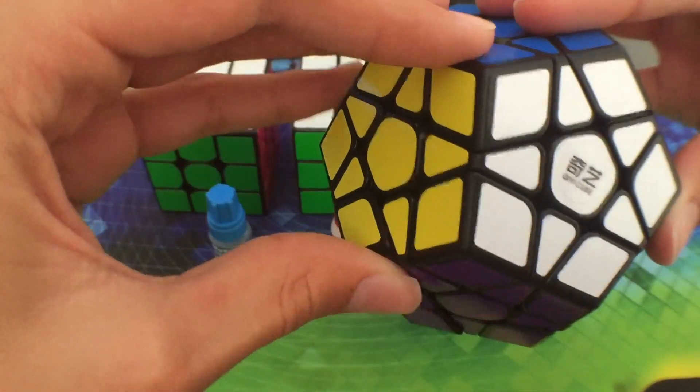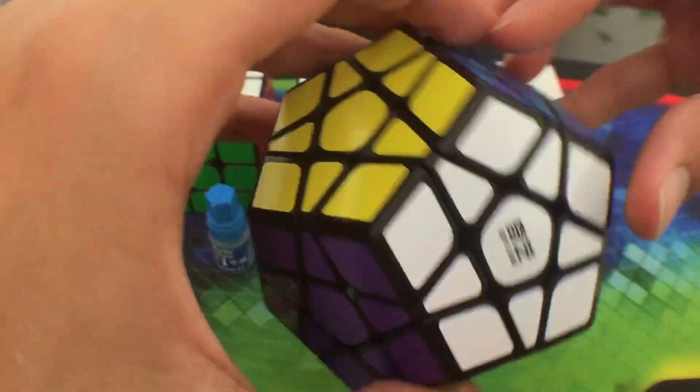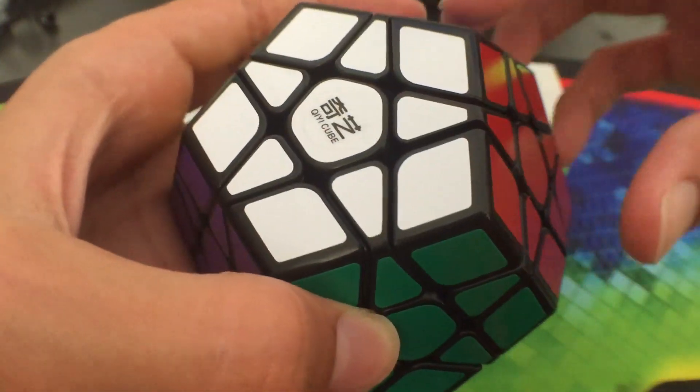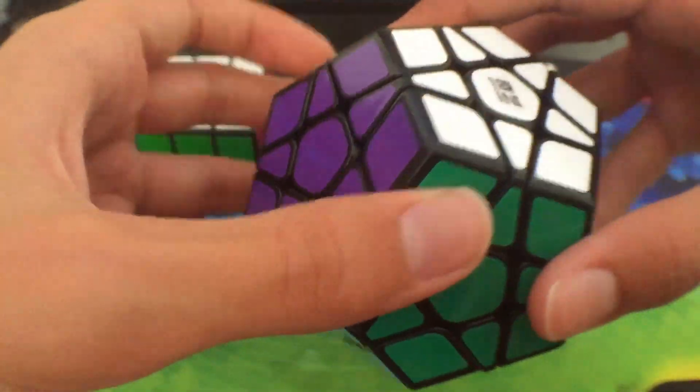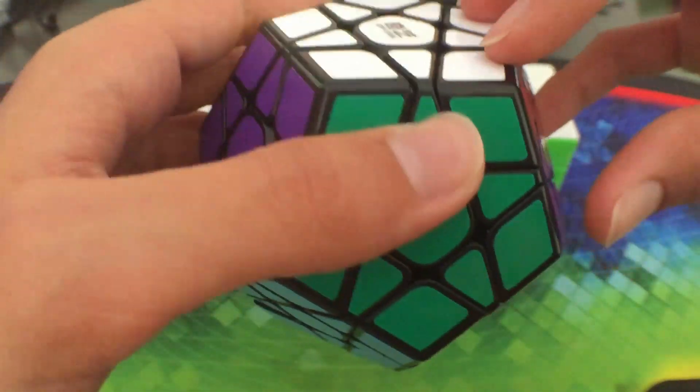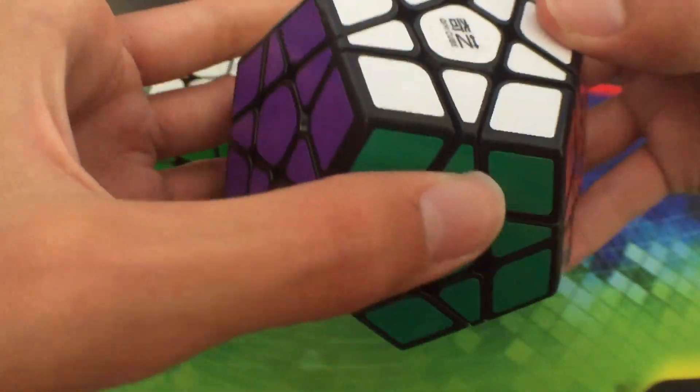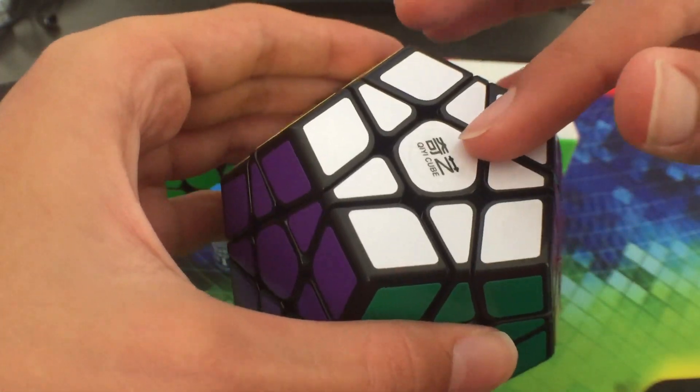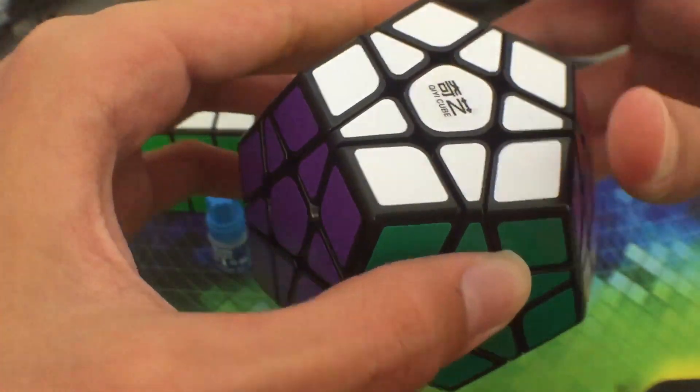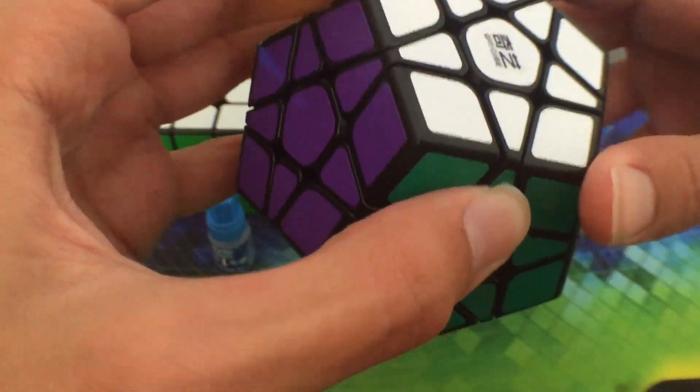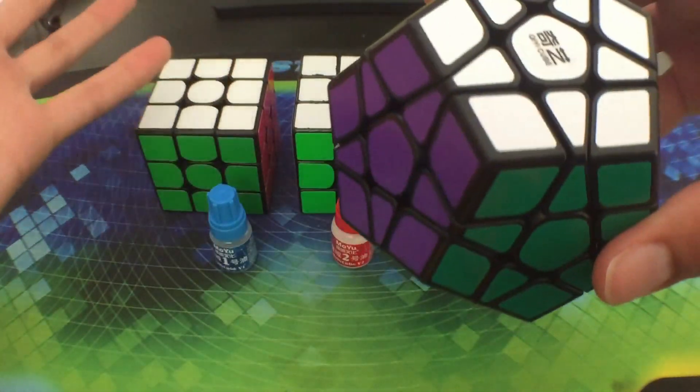Which is on sale at dailypuzzles.com.au for $9 AUD or $6.75 USD. This is a very good budget cube, it's very nice. If any of you want to try out megaminx, I definitely recommend you get this megaminx as it's really good, especially for its price.